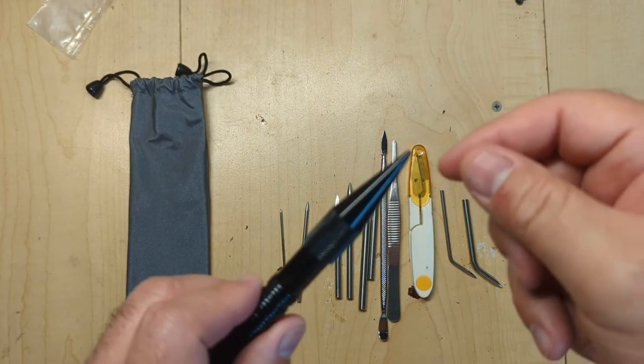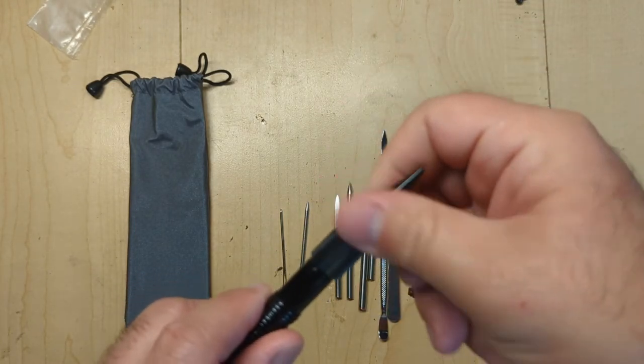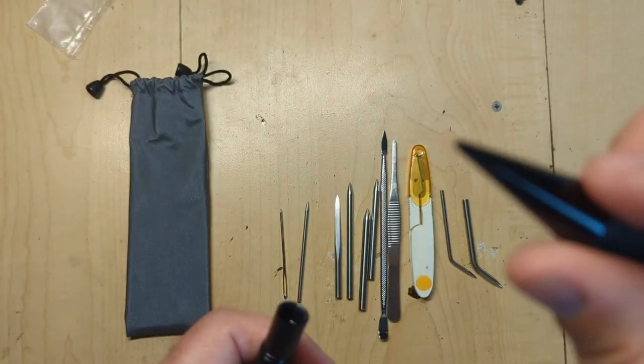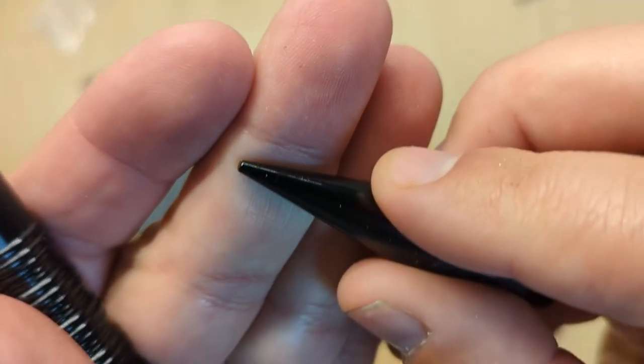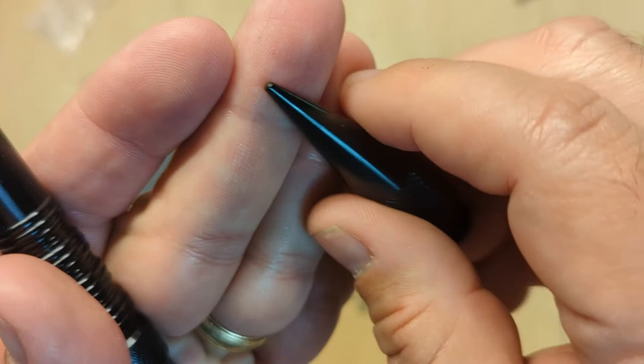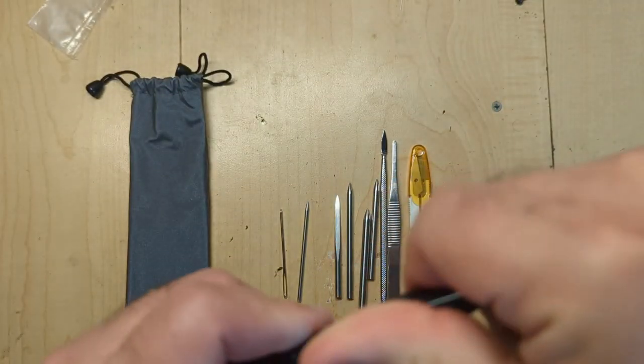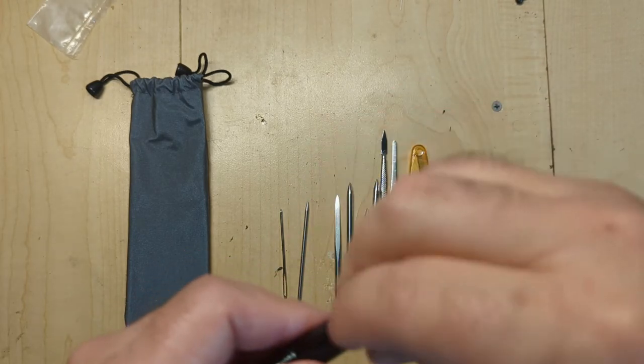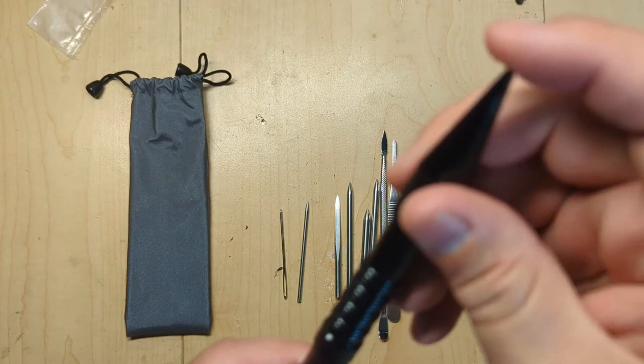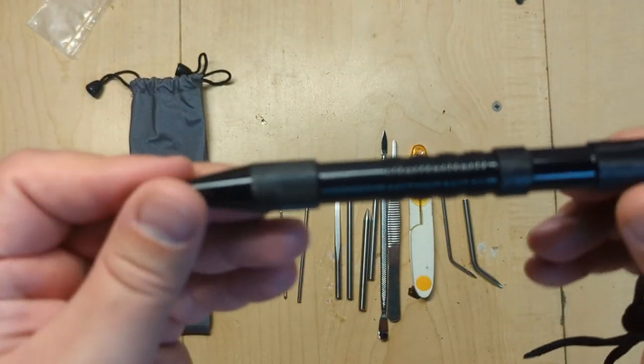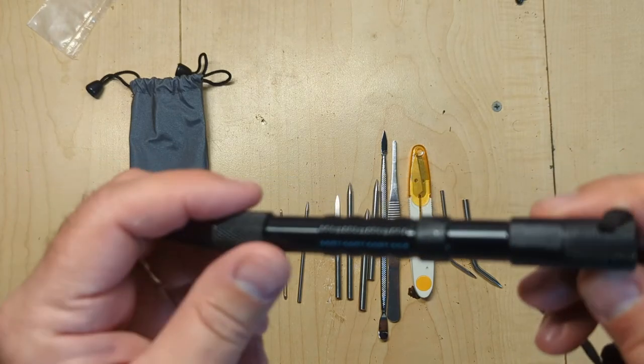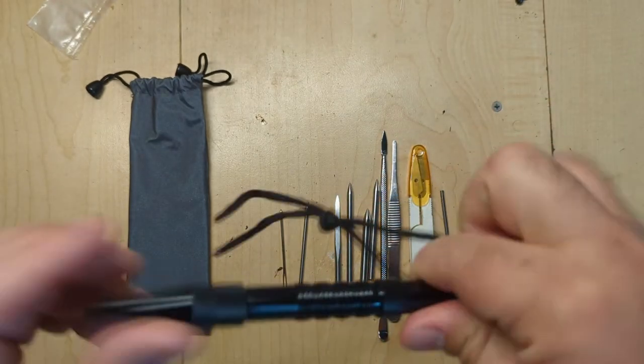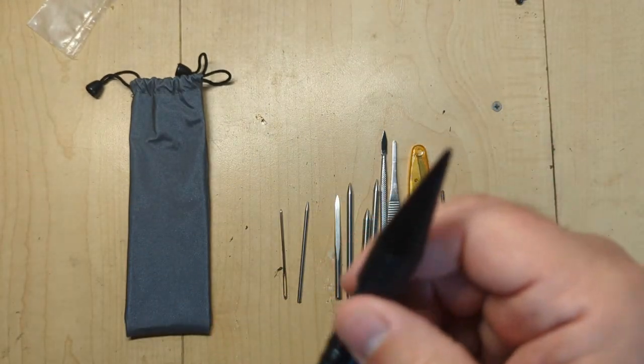The other thing is some of the kits out there have where you can replace these. So if you need something a little bit pointier, because this one, as you can see, is dull. Now, I was able to use it to pull through just fine and make holes as needed, but you might need, if you're dealing with micro cord or something like that, you might need something a little bit sharper, a little bit pointier. But overall, the Marlin Spike itself is very nice. I'll probably wind up removing this piece just because it's a little too long, but overall, very nice. So that's one of the good things.